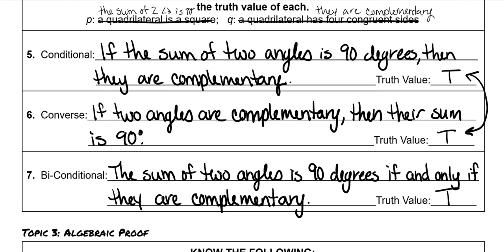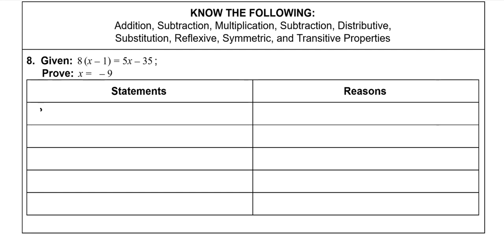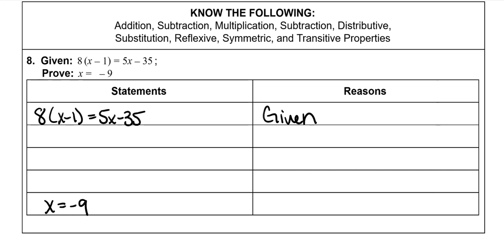Now we have an algebraic proof. With proofs, always write the given first — always, always, always. The given is your first statement, and the prove part goes down at the last statement. Your reason for the first statement is always going to be 'given.' The number one thing you never ever want to do is write 'prove' as a reason — that is a no-no. We're trying to prove that x equals negative nine by steps, and none of those steps will ever be the word 'prove.'